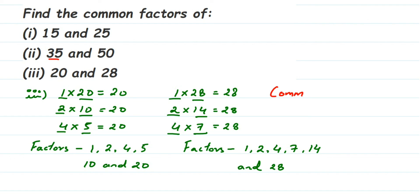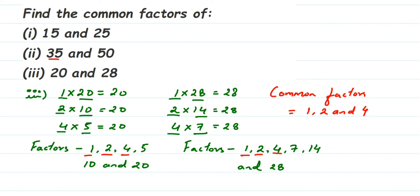Now the common factors of 20 and 28: 1 is common, 2 is also common, and 4 is common. No other number is common. So 1, 2, and 4 are the common factors. To summarize: first find the factors of each given number, then identify which ones are common. If you have any other questions or doubts, you can drop a comment — thank you so much for watching.